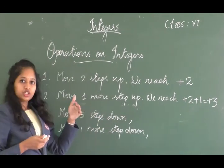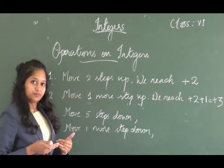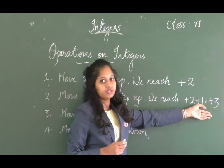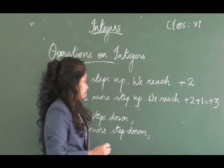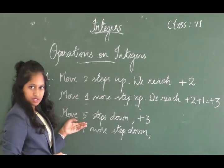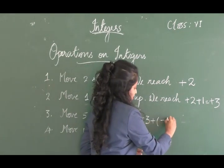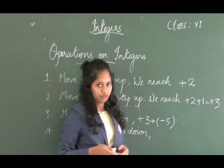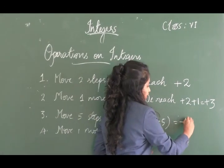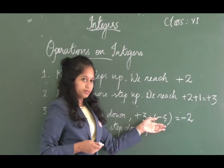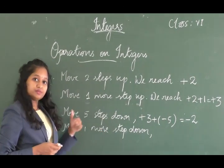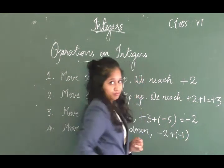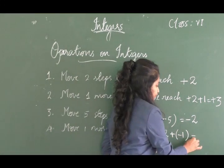From plus 3, if you move five steps down — steps down are negative — you get plus 3 plus minus 5, which gives 3 minus 5, equal to minus 2. Then moving one more step down gives minus 2 plus minus 1, which equals minus 3.